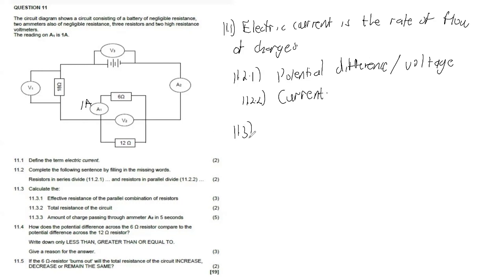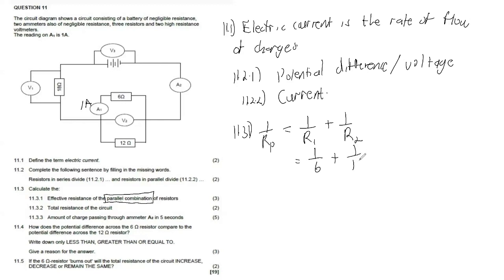Then 11.3.1 says calculate the effective resistance of the parallel combination of resistors. That's 1/R_P = 1/R1 + 1/R2. The resistors in parallel give us 1/6 + 1/12, which adds up to 1/4. So R_P equals 4 ohms.